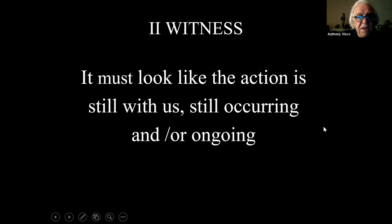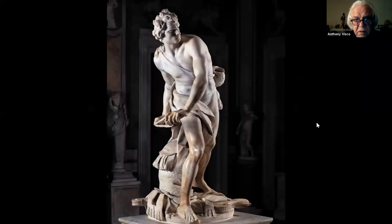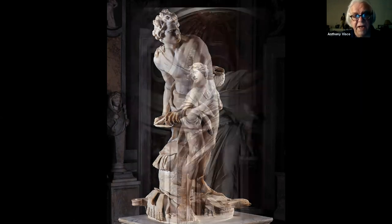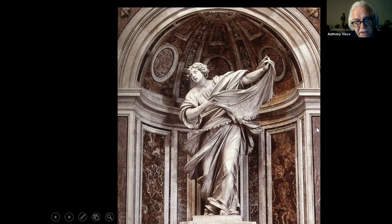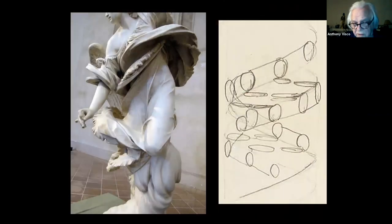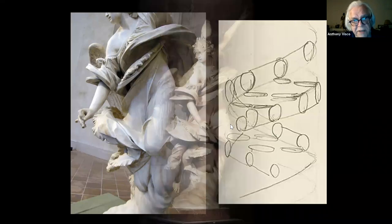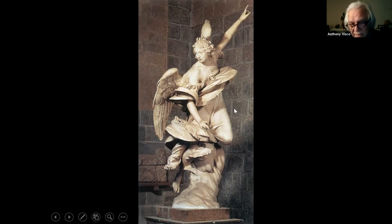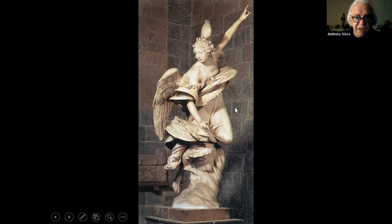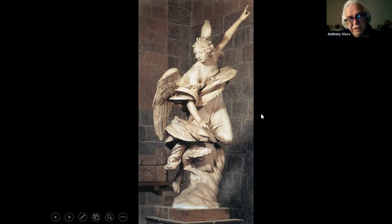It must look like the action is still with us, still occurring or ongoing. Counter-Reformation art uses this to a great degree. Here's Bernini's David — he's still in action. Here's Mochi's St. Veronica in the Vatican. There were many devices to do this, giving a great sense of witness to the viewer and the faithful. This is the helical or spiral modality — Mochi's St. Gabriel Annunciation done for the Cathedral of Orvieto. These were taken down during the modernist zeitgeist and put somewhere else because they weren't considered original.